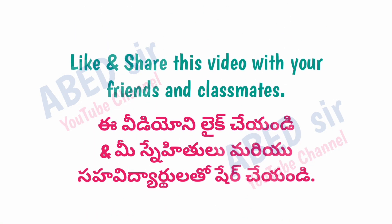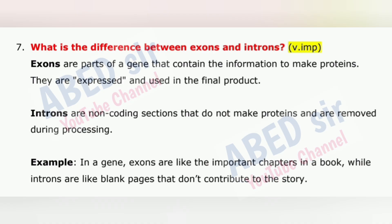Next important question is 7: What is the difference between exons and introns? Exons are parts of a gene that contain the information to make proteins — they are expressed and used in the final product. Introns are non-coding sections that do not make proteins and are removed during processing. For example, in a gene, exons are like the important chapters in a book, while introns are like blank pages that don't contribute to the story.